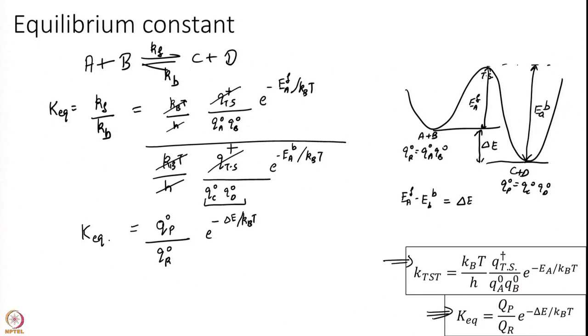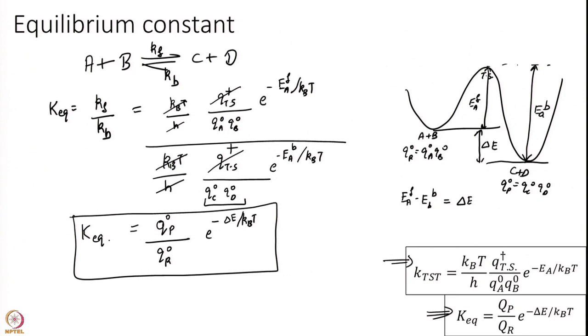This is exactly what you expect based on thermodynamics. I derived this relation a few modules ago when we were discussing statistical mechanics — you can go back to it. This relation is exactly right; it matches thermodynamics perfectly. That is very good news. We have actually made tremendous progress compared to collision theory, where we got the wrong equilibrium constant. In Transition State Theory we now get the correct equilibrium constant.